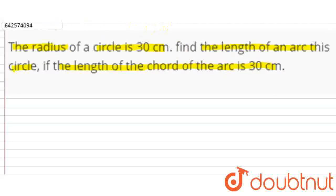Suppose that this is the circle. This is the center. Now, radius is given 30 cm. This is radius, and this is also radius.